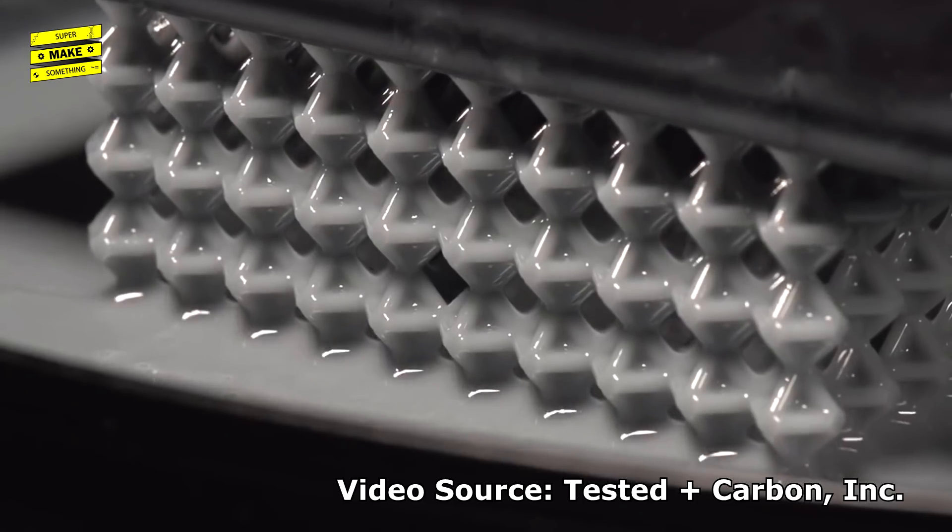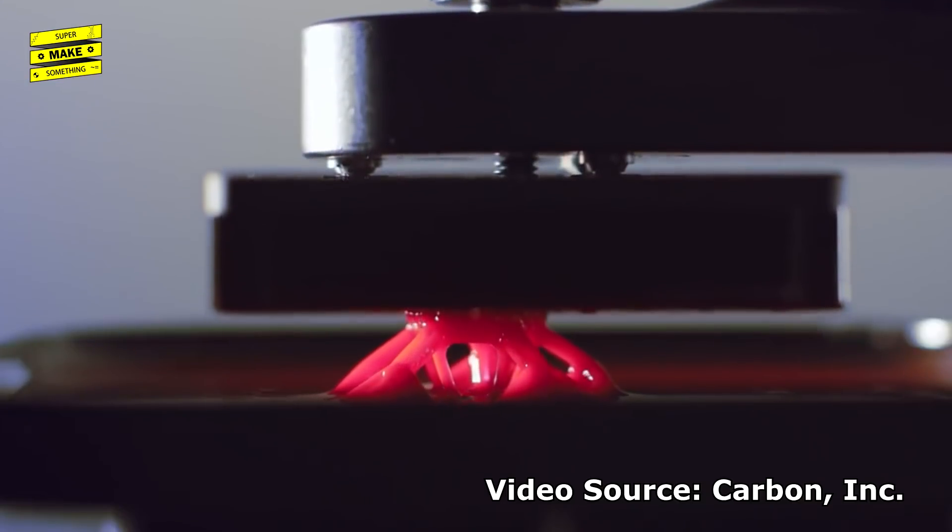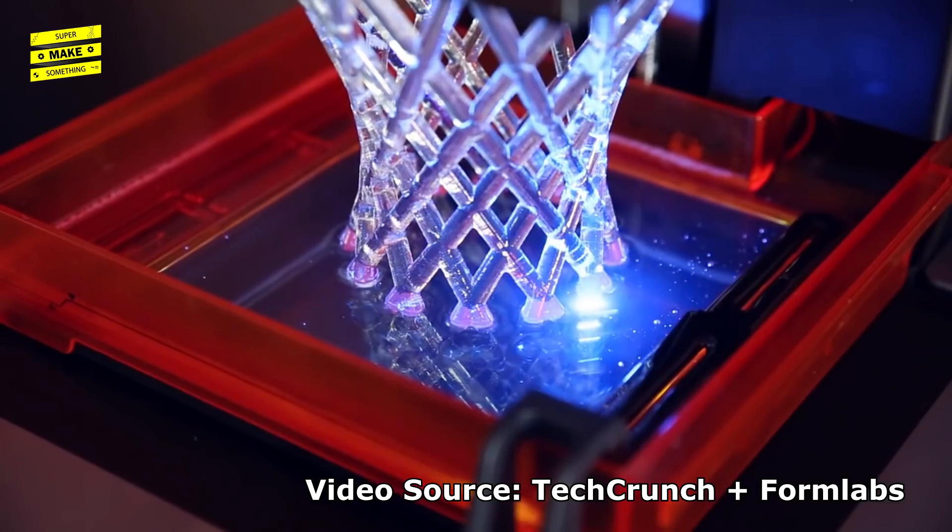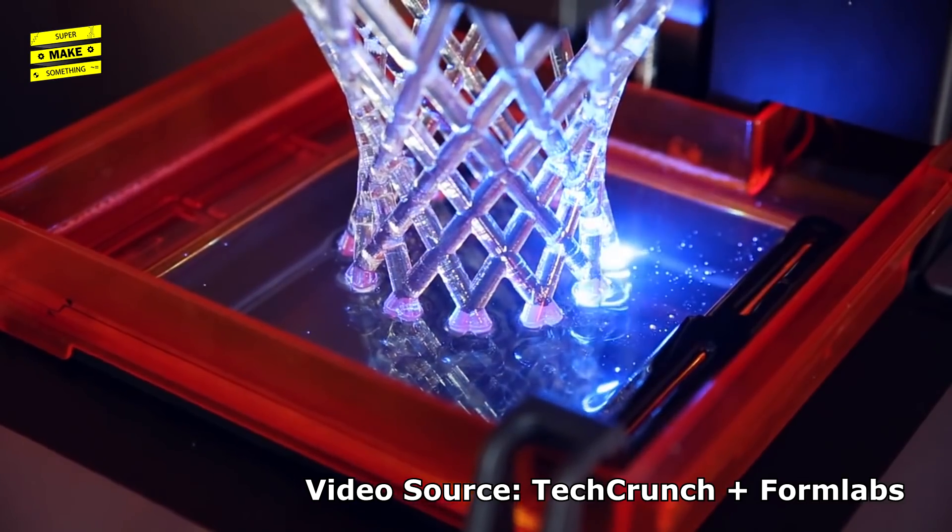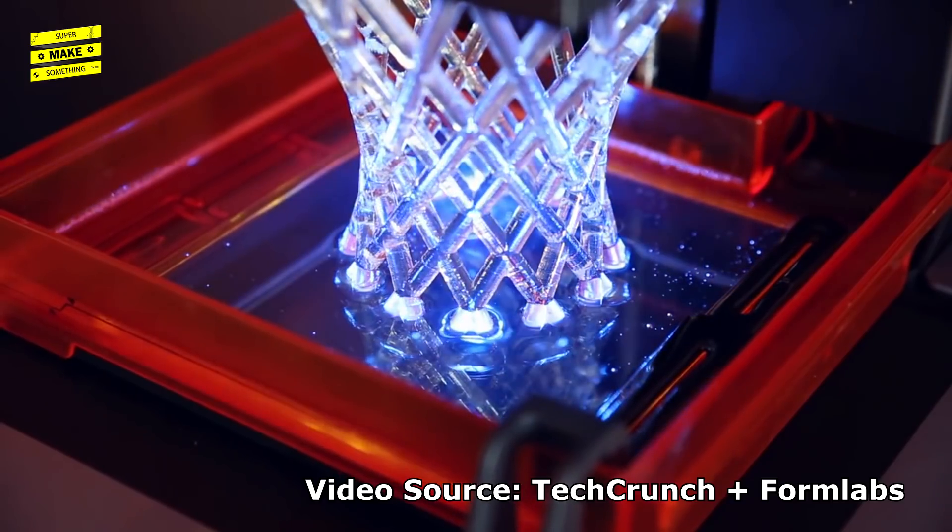More recently, printers that use a process called VAT photopolymerization have also become available at price points that puts them within reach for home use by hobbyists and makers. In this process, a UV light is used to selectively harden a photosensitive resin polymer that sits inside of a VAT at the bottom of a 3D printer.